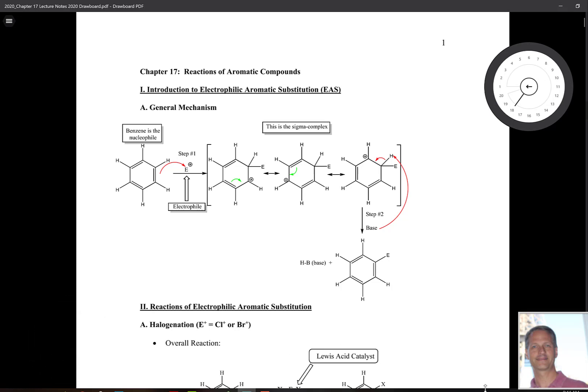Chapter 17 is a continuation of our theme of aromatic compounds. In this chapter, however, we're going to look specifically at some of the interesting reactions that involve these aromatic compounds. We'll start off by looking at a reaction known as electrophilic aromatic substitution.